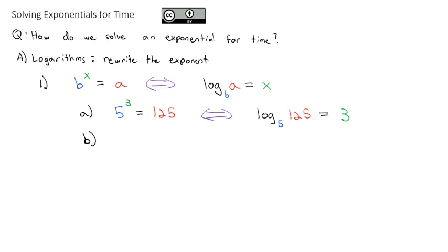We can go the other direction too. Starting with a log problem — log base 2 of 8 — if you work that out, you find it equals 3. We know that's true by rewriting it as an exponential: the base of the log is 2, so the base of the exponential is 2; the exponent is what the log equals, so 2 to the third power equals 8, which is what's inside the log. We can switch back and forth between log form and exponential form to get that exponent out when we need to solve for it.